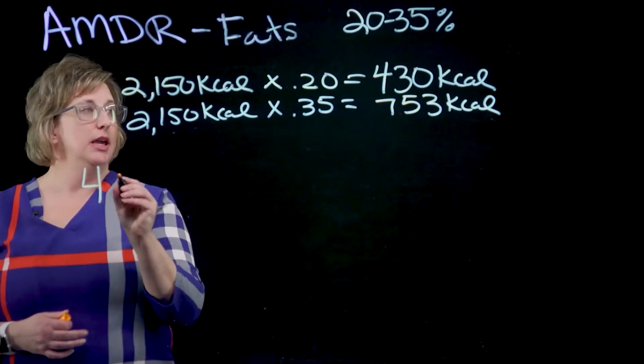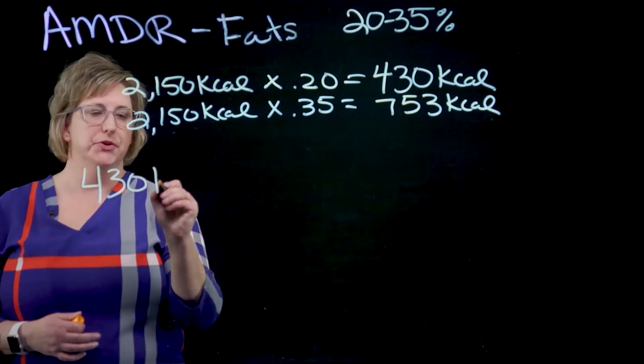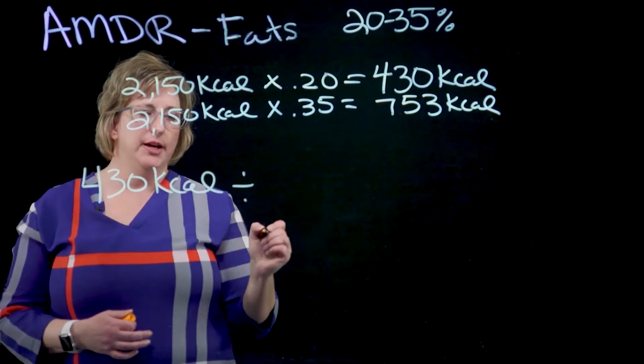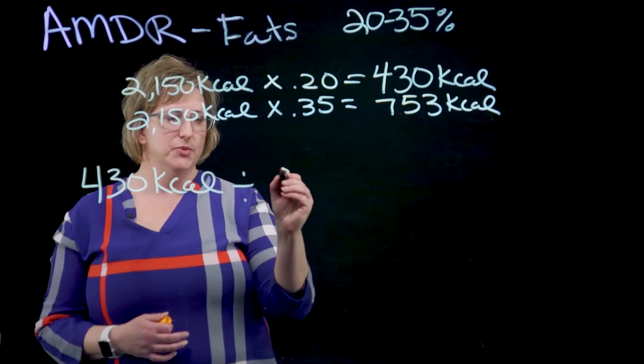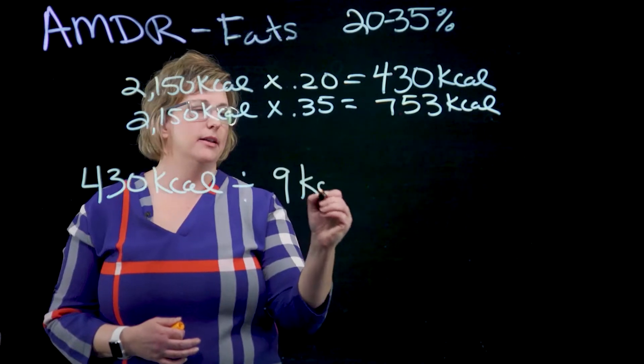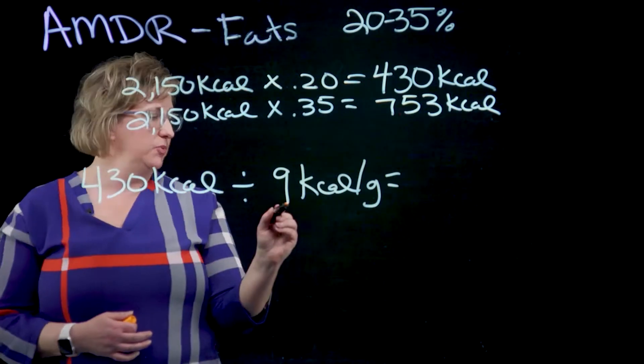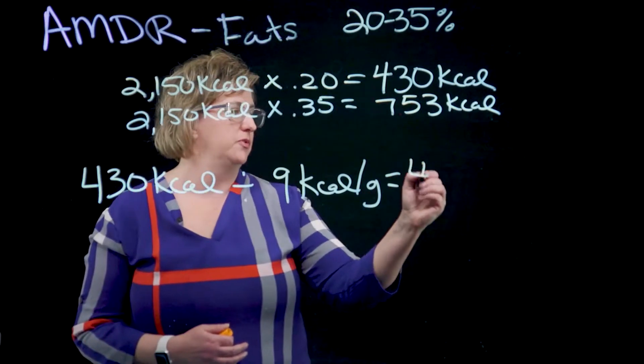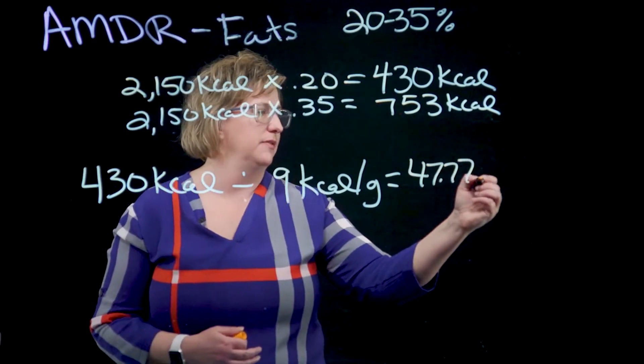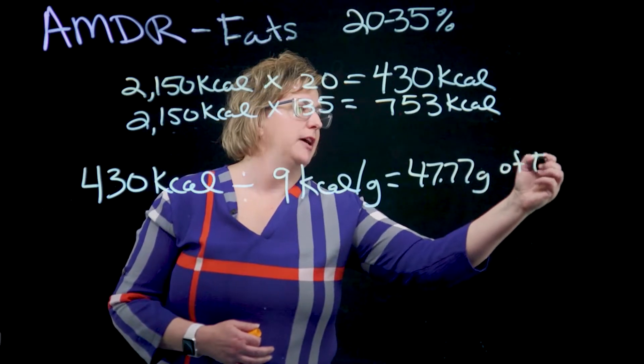We have to take the kcals at 430 and divide it by what? How many kcals per gram in this one? Nine. So when we do the math on this one, what you should get is 47.77 grams of fat.